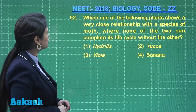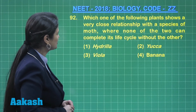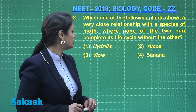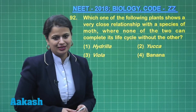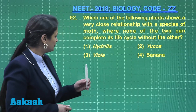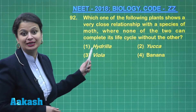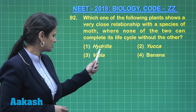Coming to question number 92: which one of the following plants shows a very close relationship with the species of moth? If we talk about the first option, hydrilla, it is pollinated by water, not insects.